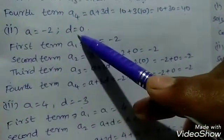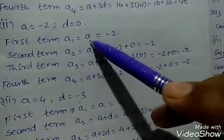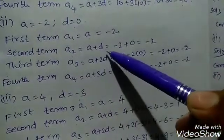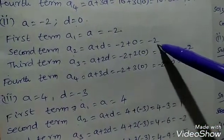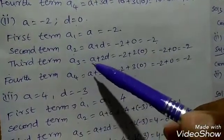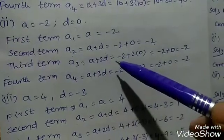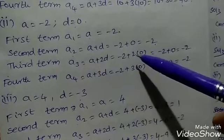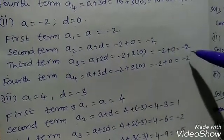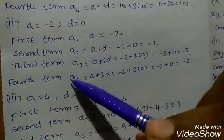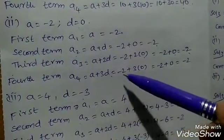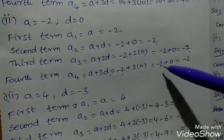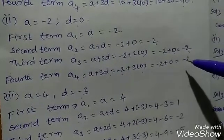Second problem: a equals minus 2, d equals 0. First term a1 equals a, that is minus 2. Second term a2 equals a plus d, that is minus 2 plus 0 equals minus 2. Third term a3 is also minus 2. Fourth term a4 equals a plus 3d, that is minus 2 plus 0 equals minus 2.